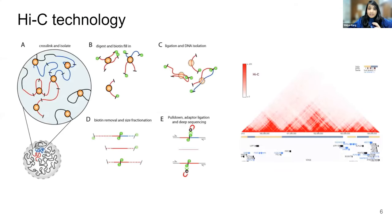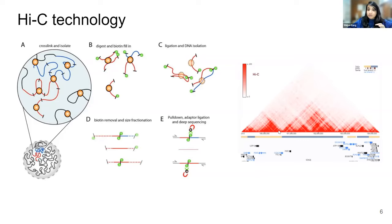There is also the Hi-C technology that captures spatially close-located genomic segments. On the x-axis you see genomic loci and on the y-axis is the contact frequency map — the darker the red color, the higher the contact frequency between two loci. At about 10 megabase intervals, you see very high contact frequency, but contact frequencies decrease at greater distances. So Hi-C is a very informative data type for long-range information.